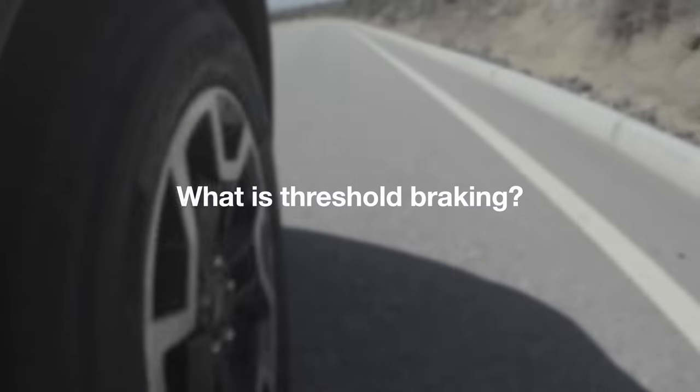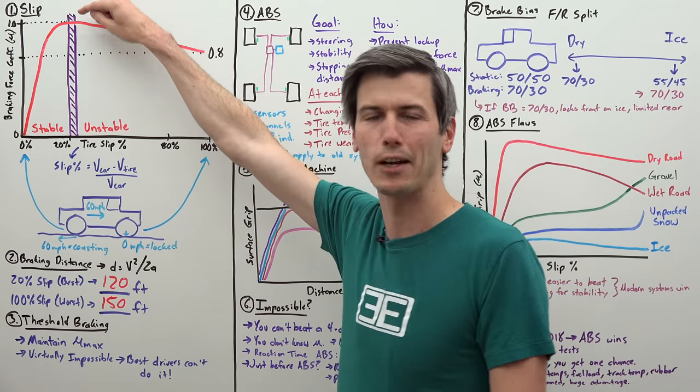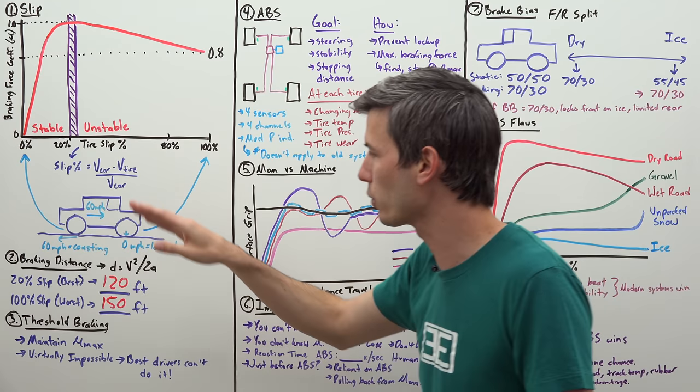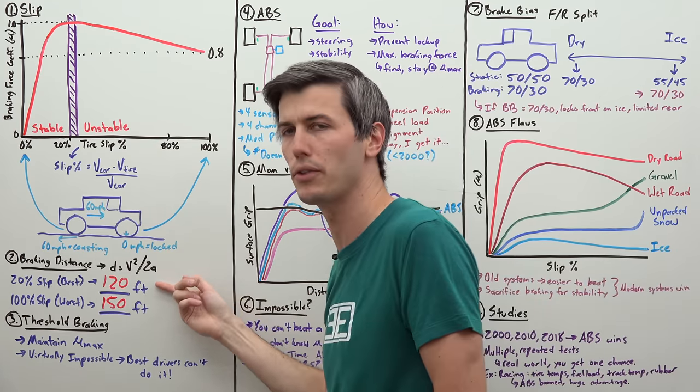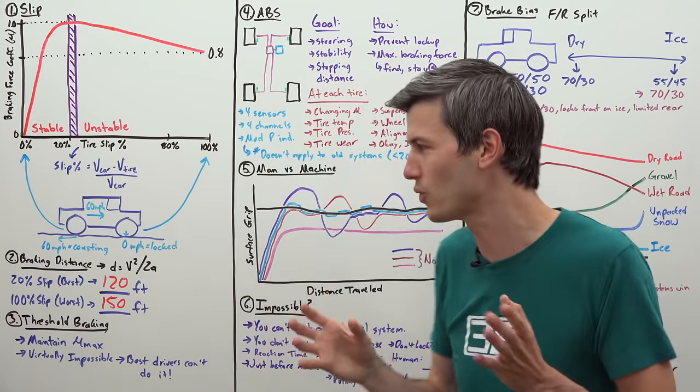Now this leads us to threshold braking. Threshold braking is when you perfectly maintain that maximum level of grip and you're at that maximum level of slip which results in the perfect braking distance. In this case, it would be 120 feet. Now this is virtually impossible to do. We'll get into the reasons why.